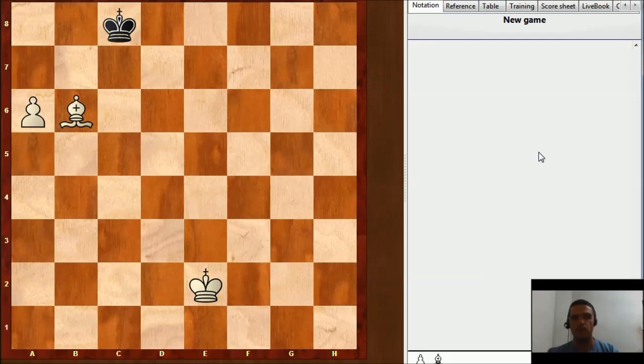And finally, let's see what happens in this other situation. It is white to move here, and white wins. Maybe you can find the move. It is the same plan. You need to avoid black king to go over here.